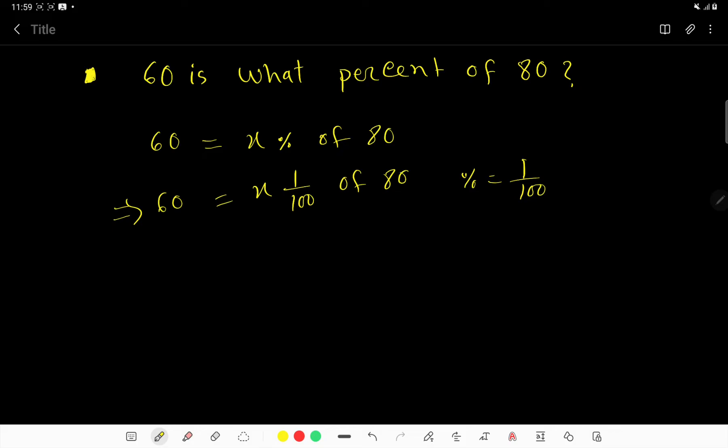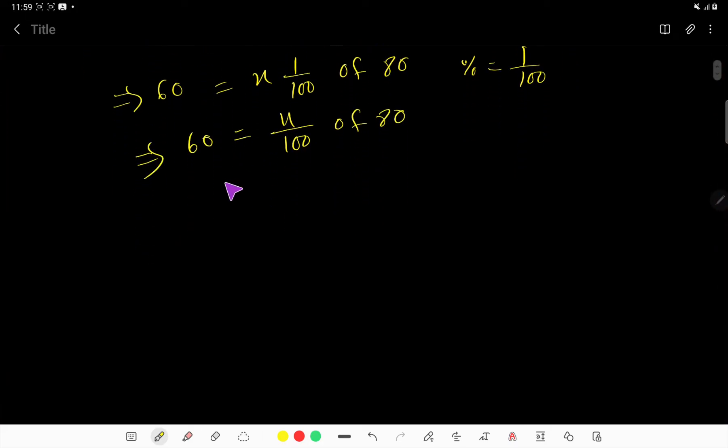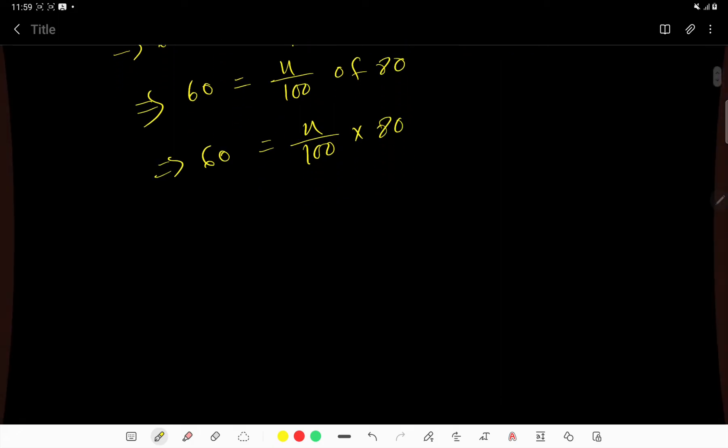80, that is X divided by 100 of 80. Of means multiplication sign, so times 80. Now you have to solve this equation.